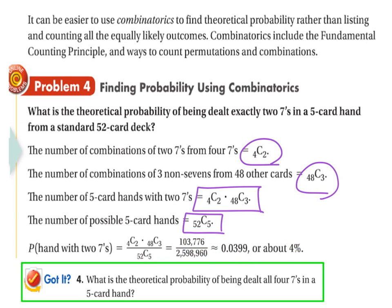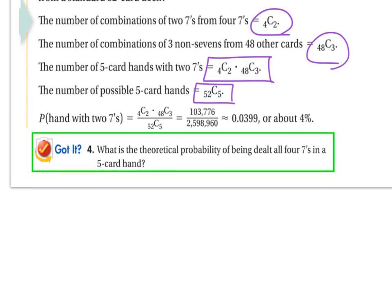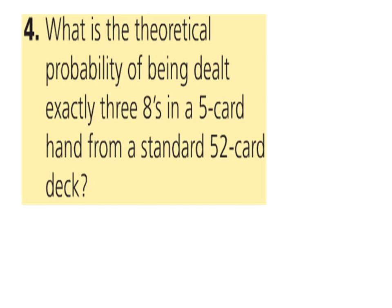Similar sort of question. What would be the theoretical probability of being dealt all four sevens in a five-card hand? We would start with 4C4. That would be the only way to get exactly all four sevens, which is actually one. Then from the other 48 cards, we would only need one card. So that's actually going to be 48. The 52C5 will be the same. So we end up with 48 over the 2,598,960.